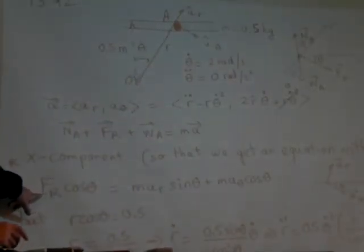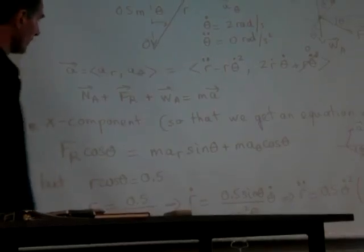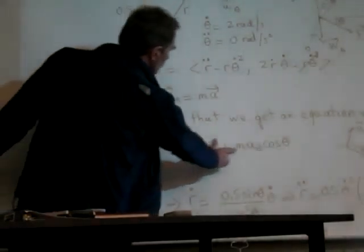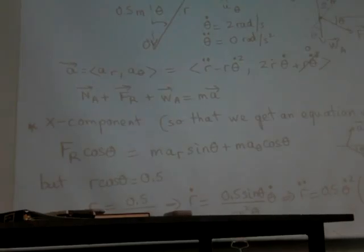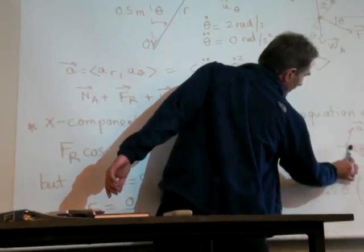So then you can say that F rod cosine theta, so the X component of F rod, you can solve for F rod in there. It's going to be equal to F rod and its component along the X direction. So why do we have that? It's because of what you have here.